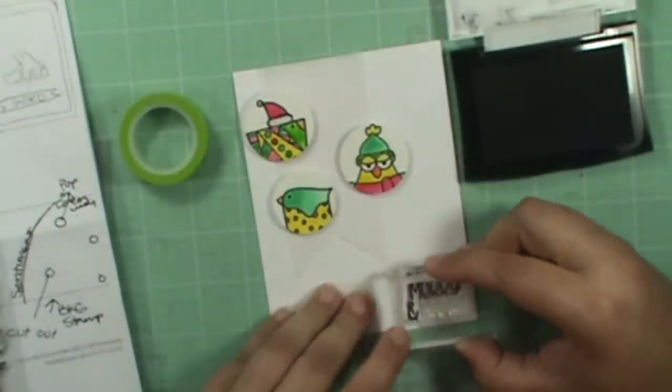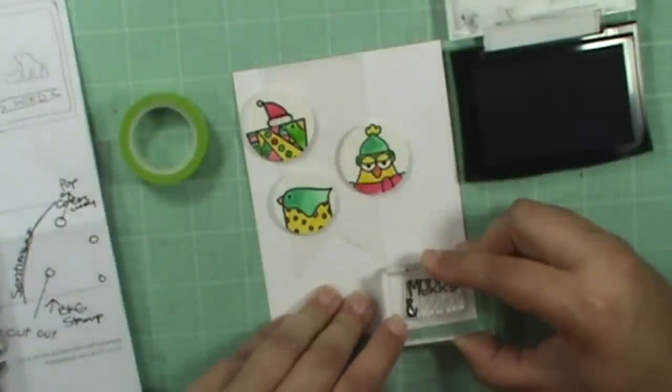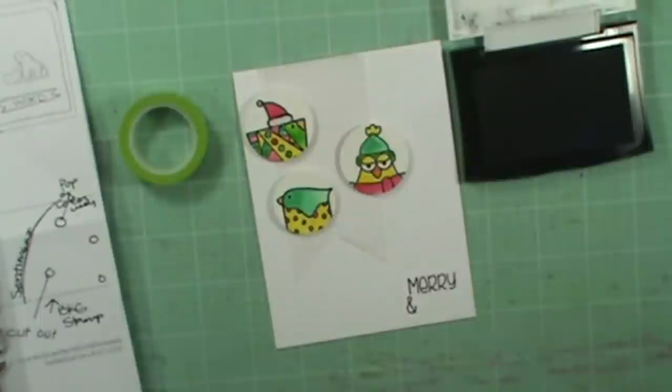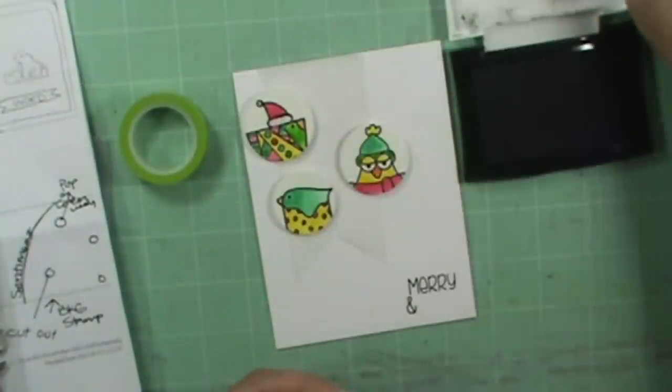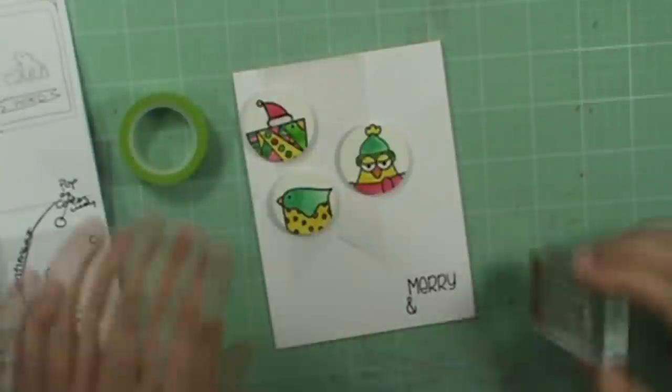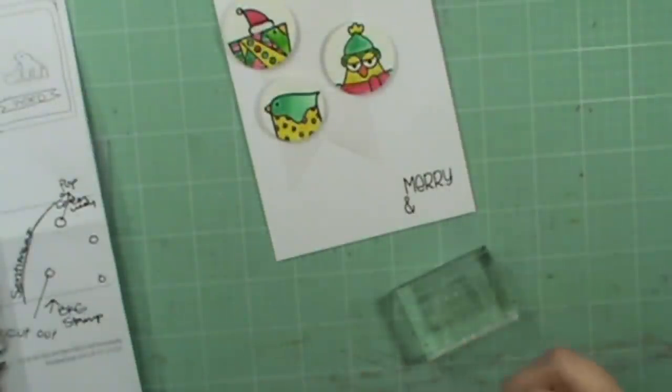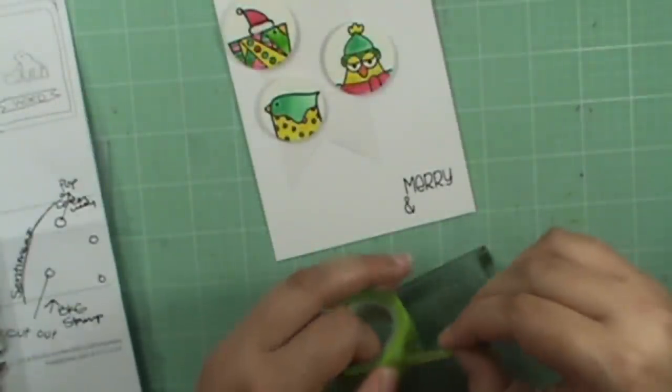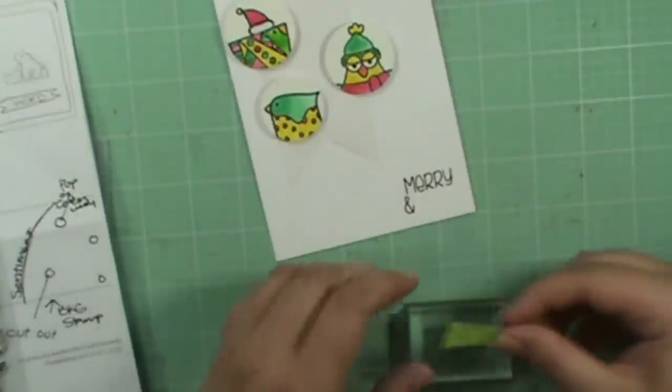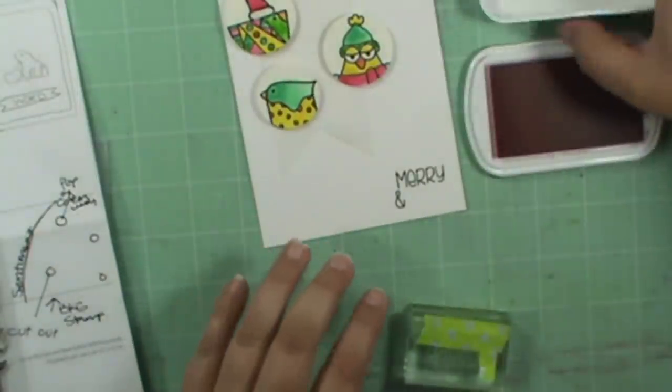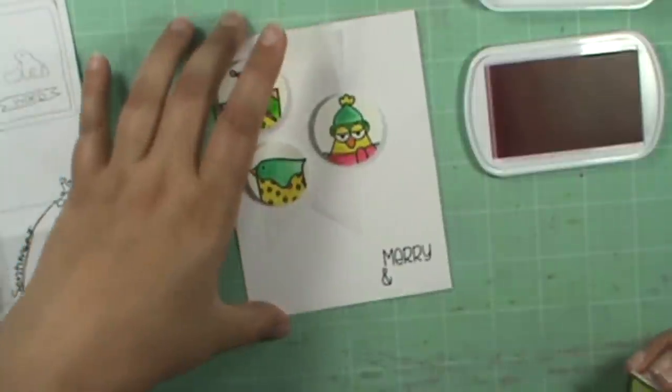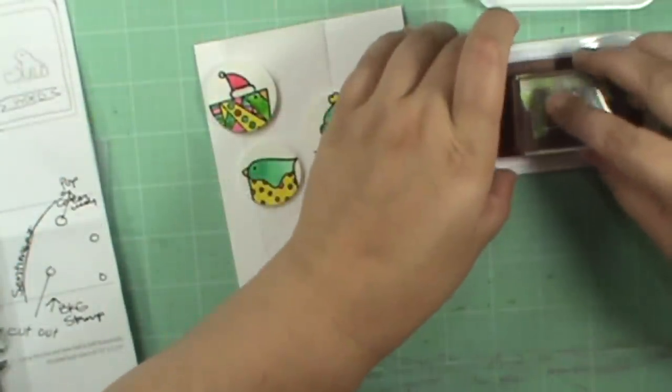I'm going to stamp this down and clean off the stamp really well and make sure it's dry before you move on to do your next stamp. Now I'm going to do the exact same thing, but I'm going to washi tape over the merry and the and. I have My Favorite Thing Razzleberry and this seriously is one of my favorite bright pink colors. It is so awesome. I'm going to ink it up really well.